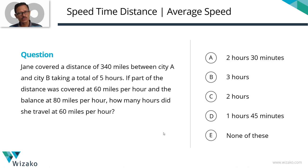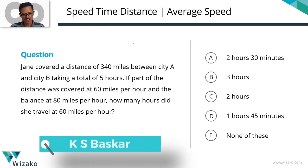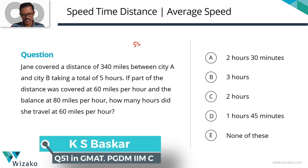It's an easy GMAT problem-solving question from the topic Rates, Speed, Distance, Time. It focuses on concepts of computing the distance using the distance formula, which is speed times time, and average speed. This question is classified as a 550 to 600 level question — it's really an easy question.